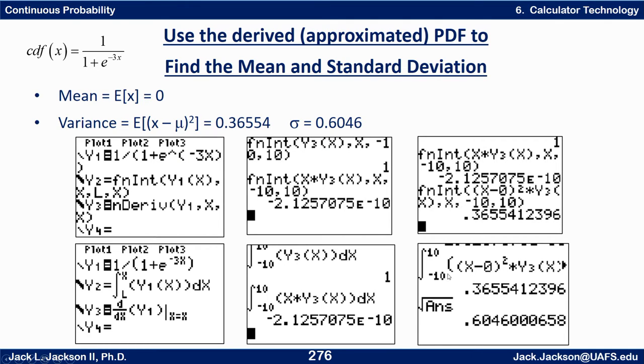And then the variance I want to integrate X minus the mean squared times the PDF. Same limits work. And there's the, that's at least approximately the variance. Square root of that there's the standard deviation right there.